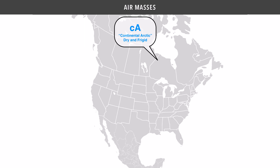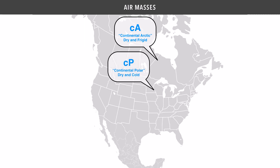The more common cold air mass that affects the United States is a CP, or continental polar, air mass. This sort of air mass is dry and cold, though not quite as cold as an Arctic air mass. These swoop down from Canada and have a major impact on the weather in the northeastern United States.